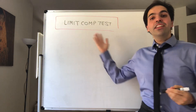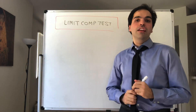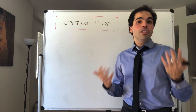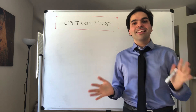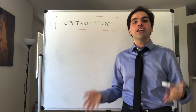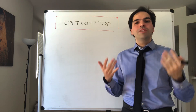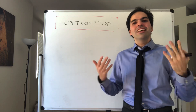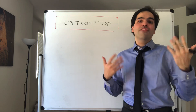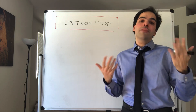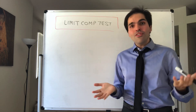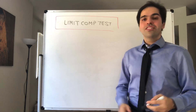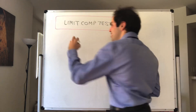Alright, thanks for watching. Today we will prove the limit comparison test, which basically says that if, in the long run, your series becomes like a convergent series, then it converges, and if, in the long run, it becomes like a divergent series, then it diverges. Here's what I mean by that.